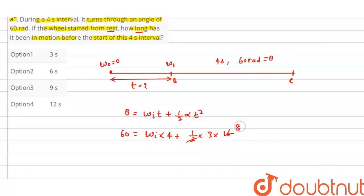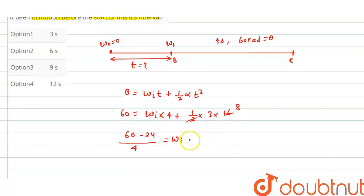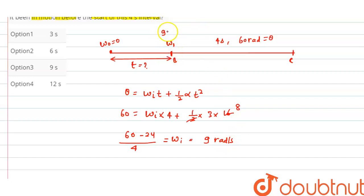Solving: 60 − 24 = 36, and dividing by 4 gives ω_initial = 9 radian per second. So at point B, the angular velocity of the wheel is 9 radian per second.